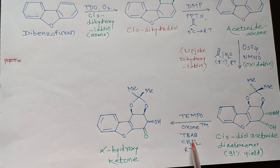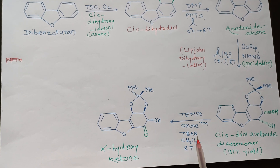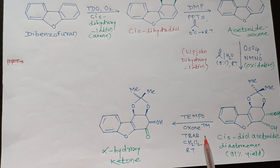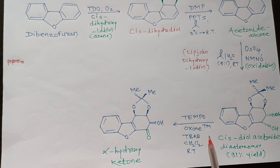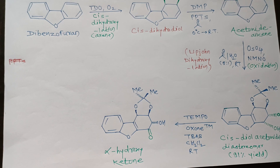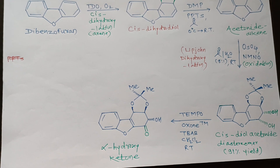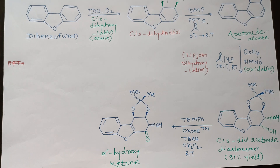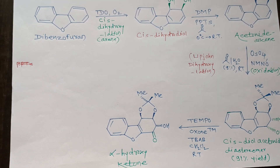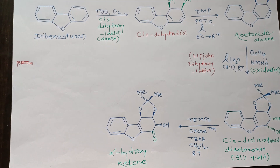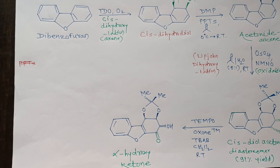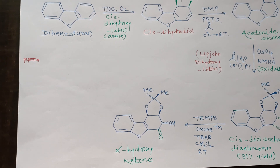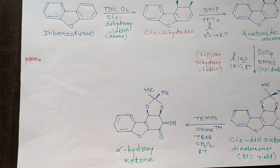TBAP means tetrabutylammonium bromide. It is my request to all students to study the details about the structures of all reagents used in the synthesis of this natural product. Most of the reagents are very selective, and you can apply this knowledge of reagents in examinations like CSIR NET, GATE, and SET.